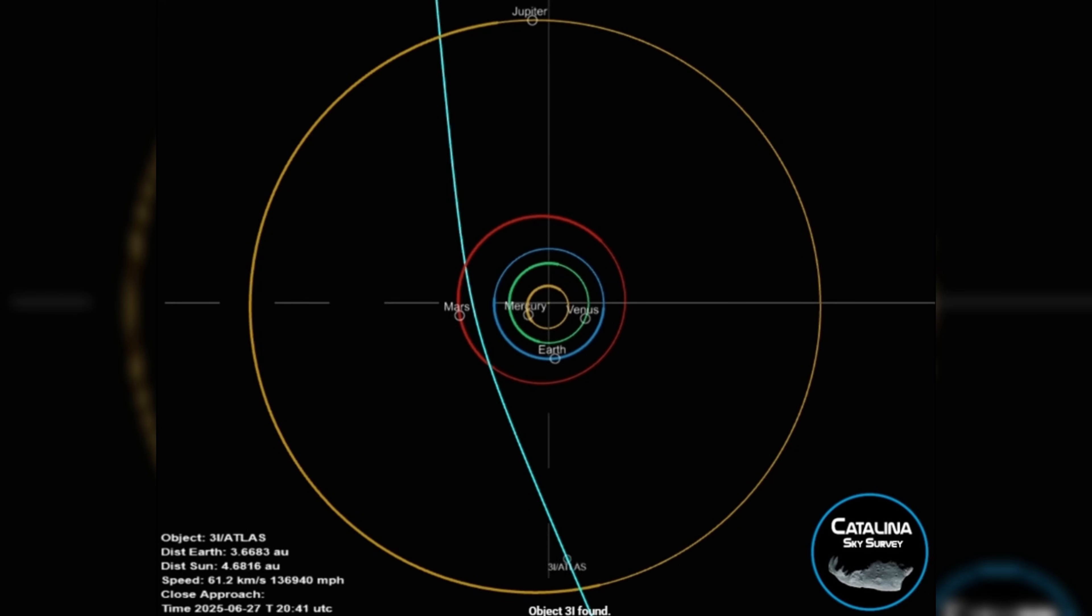Another anomaly concerns the trajectory of 3I Atlas. The object was observed following a retrograde path, meaning it was traveling in the opposite direction of most objects in the solar system. While retrograde orbits are not impossible, they are rare for interstellar objects. What makes this even more curious is the fact that 3I Atlas's trajectory was aligned closely with the solar system's ecliptic plane, the flat, disk-like region where most of the planets orbit the sun.